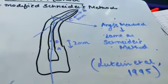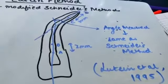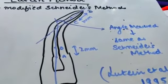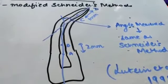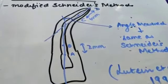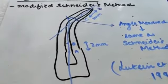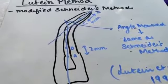If the value is less than 5 degrees, then the canal is considered to be straight. Between 5 to 20 degrees, it's moderately curved, and if it is more than 25 degrees, it is considered to be severe curvature.